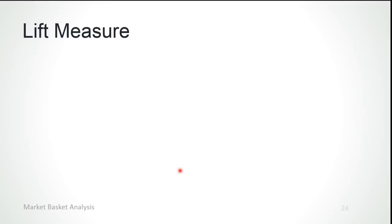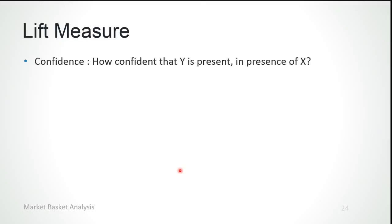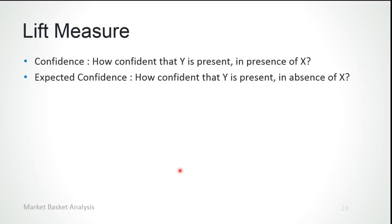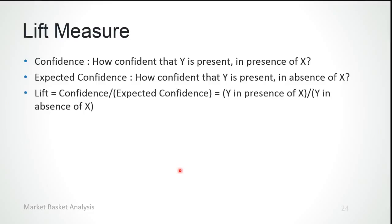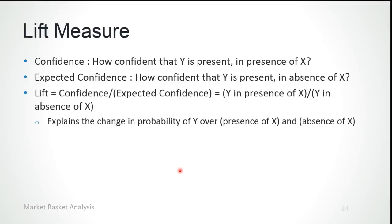Another new terminology in market basket analysis is the lift measure. Confidence is how confident we are that Y is present given X is present, and expected confidence is how confident we are that Y is present in the absence of X. We define lift measure as the ratio of confidence to expected confidence — that is, the ratio of Y in the presence of X to Y in the absence of X. Lift basically explains the change in probability of Y across two instances: presence of X and absence of X.